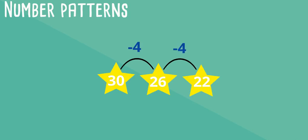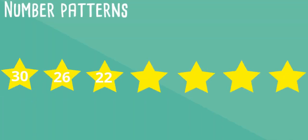What can you observe in this pattern? On subtracting 4 from 30 we get 26 which is the next number. Now again on subtracting 4 from 26 we get the next number that is 22. We see that in each step the numbers are reducing by 4.